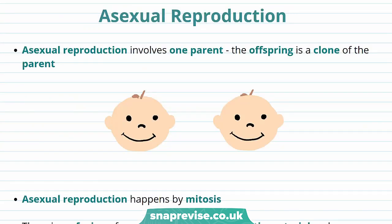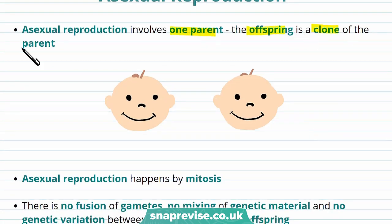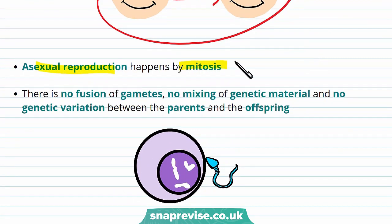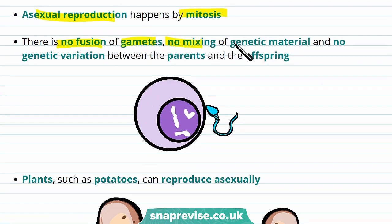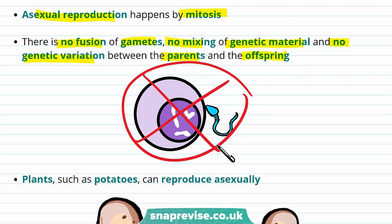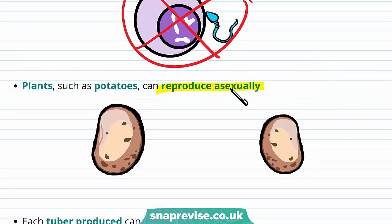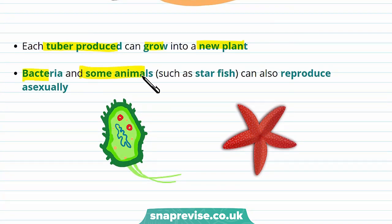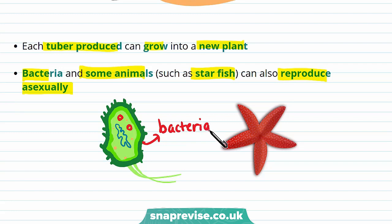Now let's go over another type of reproduction: asexual reproduction. Asexual reproduction involves only one parent and the offspring is a clone of the parent, meaning the offspring and the parent are genetically identical. Asexual reproduction happens by mitosis, and unlike meiosis there's no fusion of gametes, no mixing of genetic material, and no genetic variation between the parents and the offspring — there is no fertilisation. Plants like potatoes can reproduce asexually by growing tubers, and each tuber produced can grow into a new plant, meaning these potatoes are clones of each other. Bacteria and some animals such as starfish can also reproduce asexually; bacteria do this through a special process called binary fission, and starfish and sea anemones can also reproduce asexually.